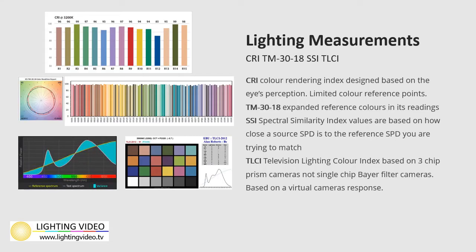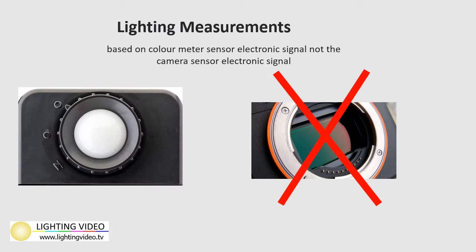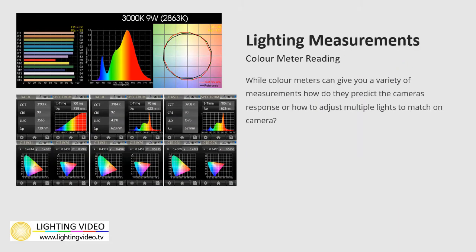Many lighting metrics exist to measure light; however, for me these measurements didn't indicate a light's performance on the specific camera I was using, nor did they indicate the spectral adjustments needed to meet the needs of the camera. Color meter readings are based on the meter's sensor, not the image sensor of the camera. So even with all of these readings, do they indicate your camera's response to these sources, or how to adjust multiple light sources to appear harmonious so your camera sees them as identical?